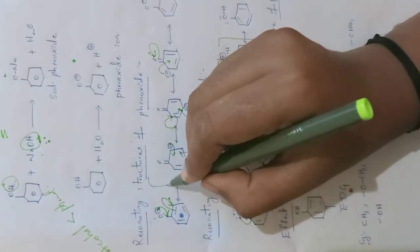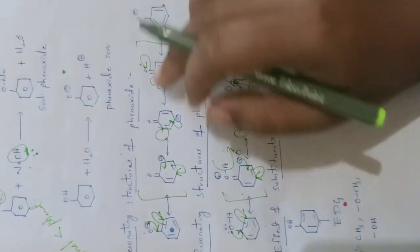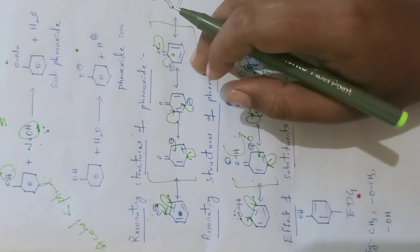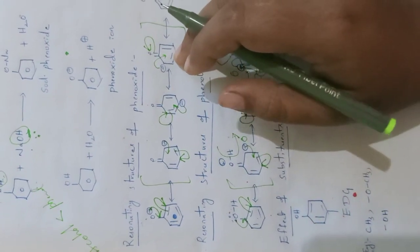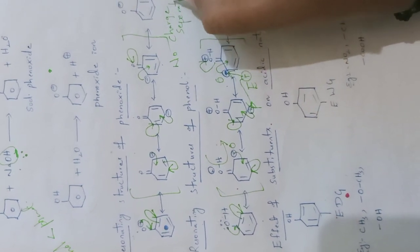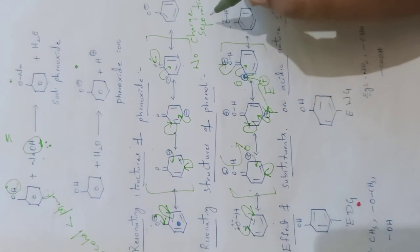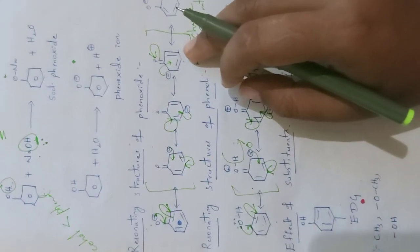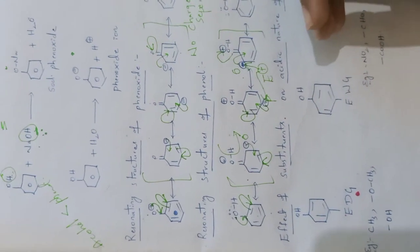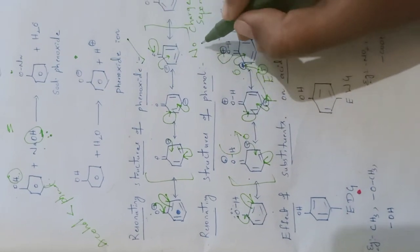These three should be considered as the main contributing resonating structures of phenoxide. If you observe the phenoxide structure, we can see only one charge — there is no charge separation. Charge separation means the presence of two charges. Such charge separation is not present in phenoxide resonating structures. A resonating structure without charge separation is more stable than one with charge separation. Among the resonating structures of phenol and phenoxide, phenoxide is highly stable because of the absence of charge separation.